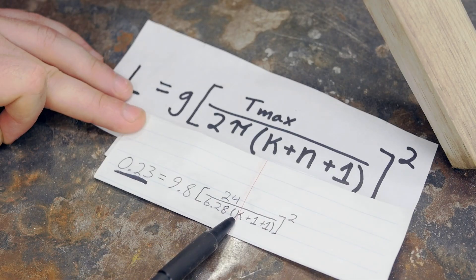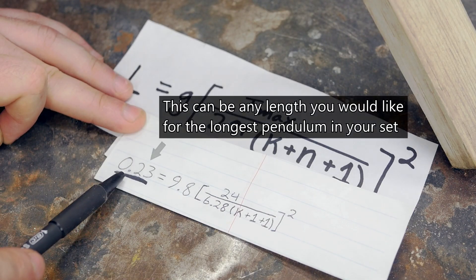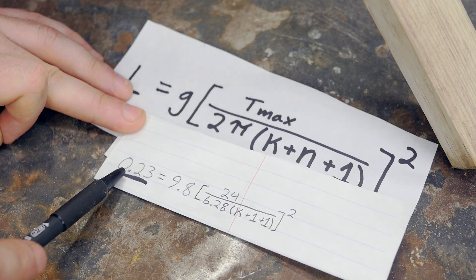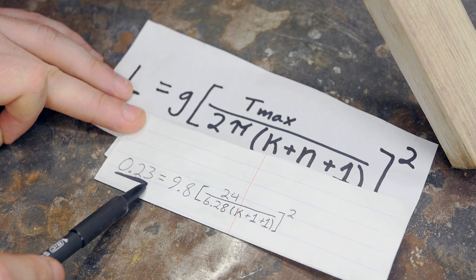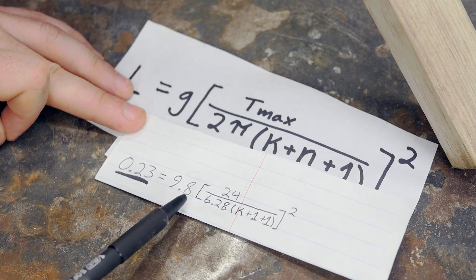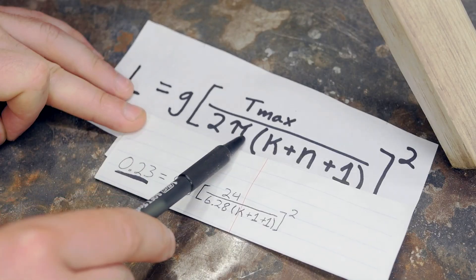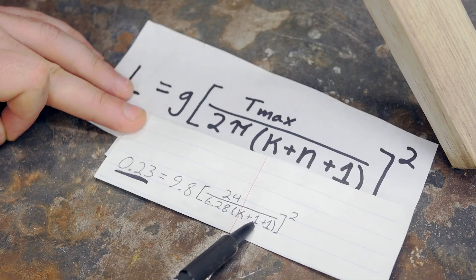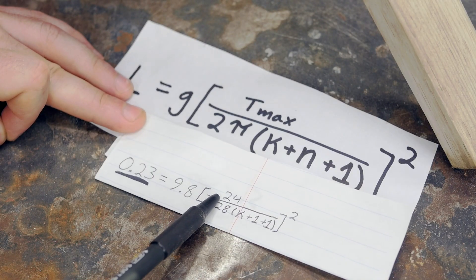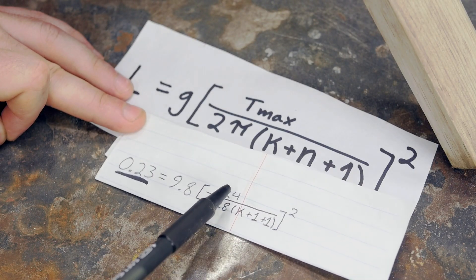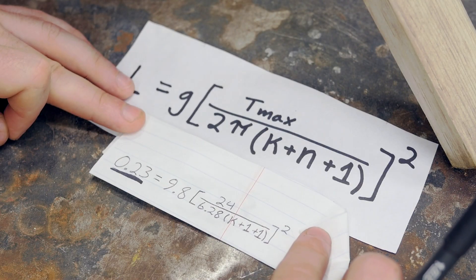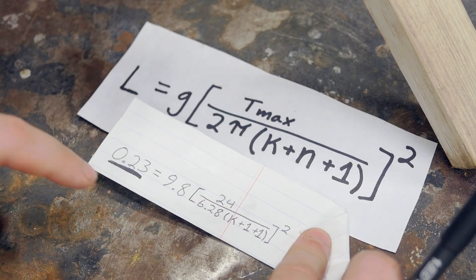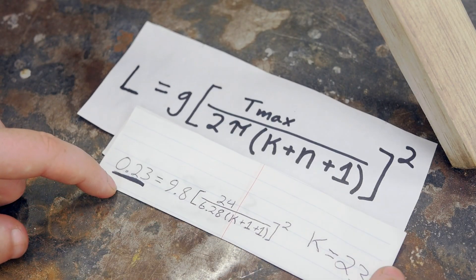So in order to solve for K, I just need to decide on a length for my first pendulum and input that measurement in meters. So my first pendulum in my array is 0.23 meters. I then input 9.8 for gravity, 2 times pi for this figure here, I put in 1 for N because I'm working on the very first pendulum in my series, and I decided on a 24 second duration before repeat. Now solving this equation is just simple algebra since we only have one variable left that's unknown, and it outputs a value of K equals 23.